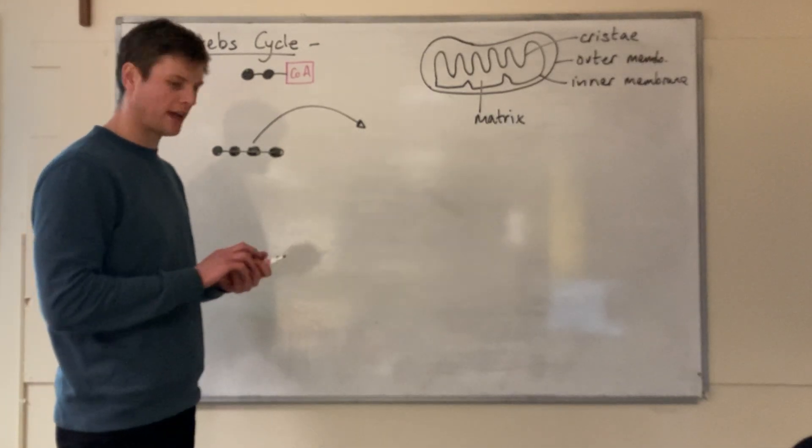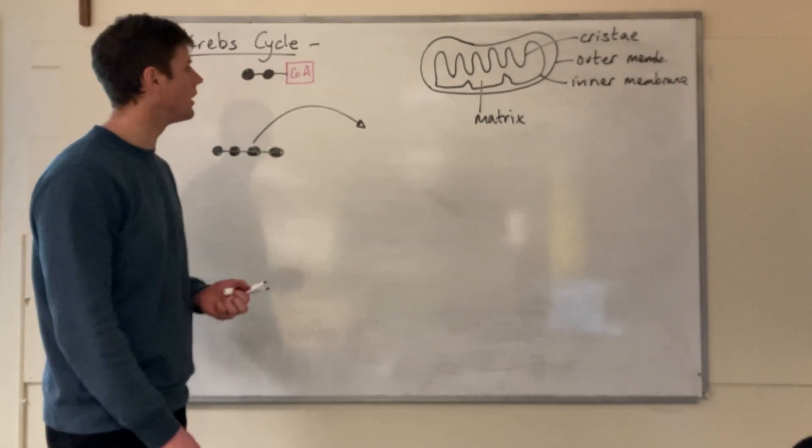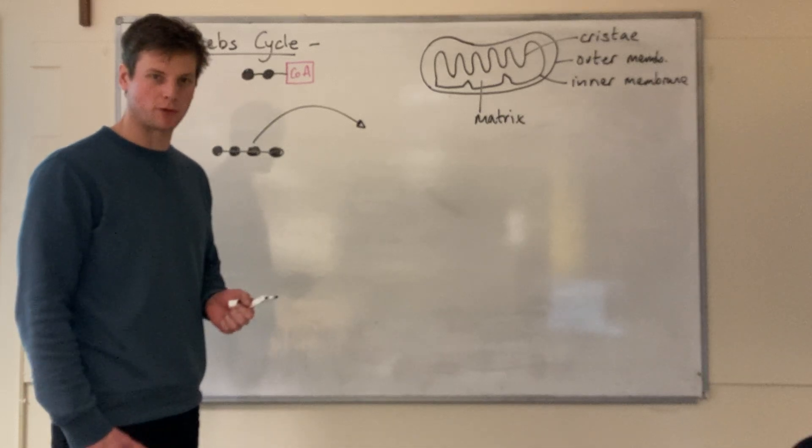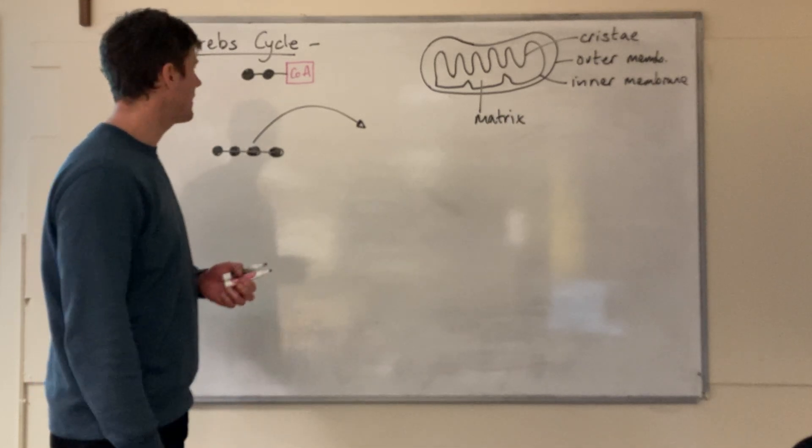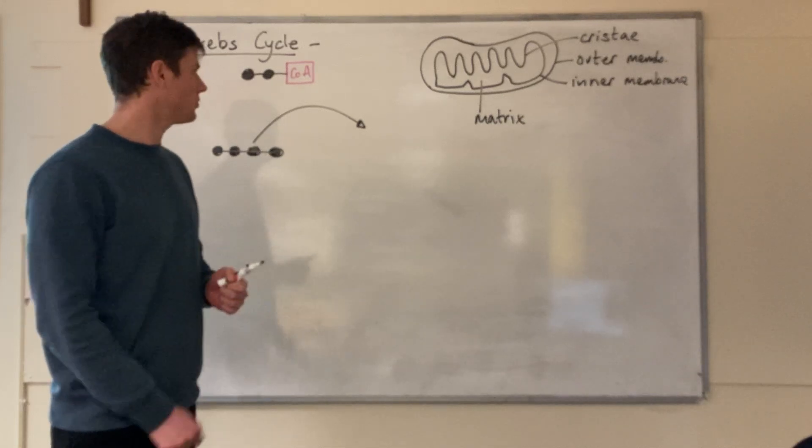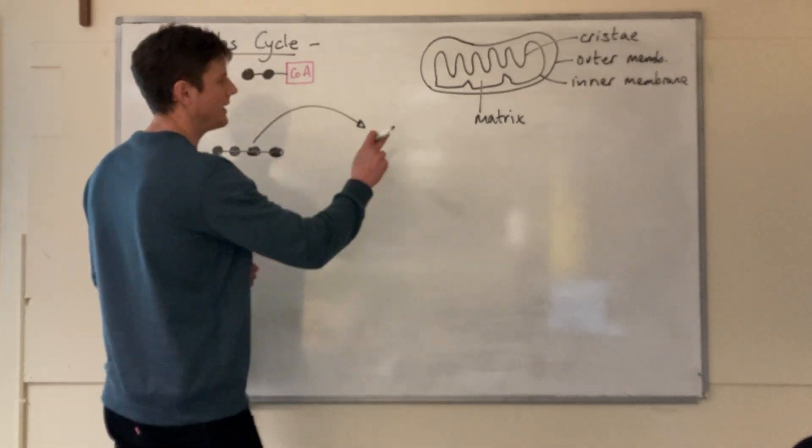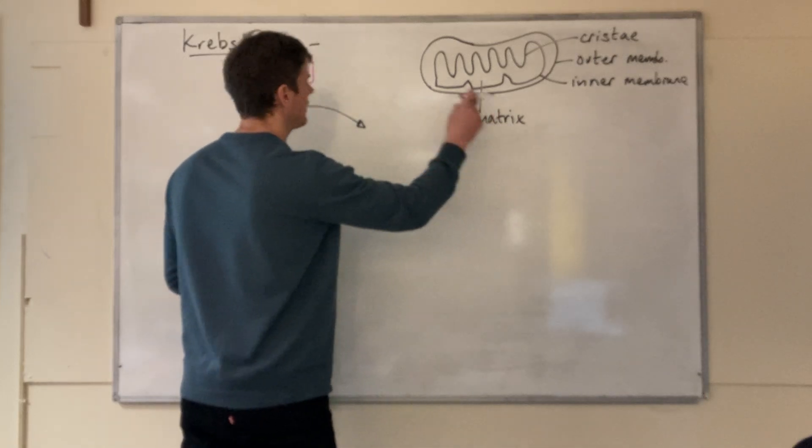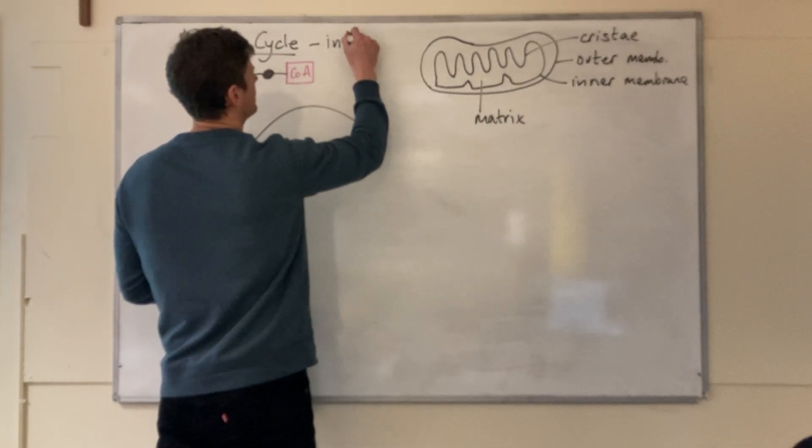Hello again. Okay, this is the next stage of aerobic respiration, called the Krebs cycle. It only occurs in the presence of oxygen and it takes place in the matrix of the mitochondria.